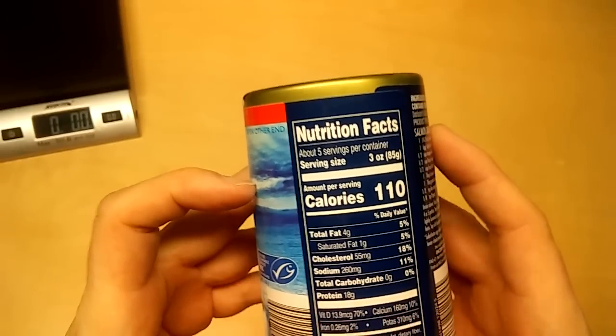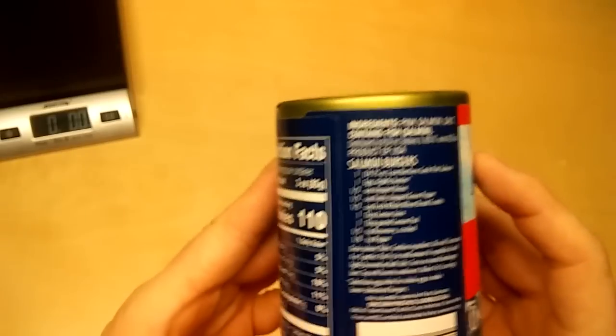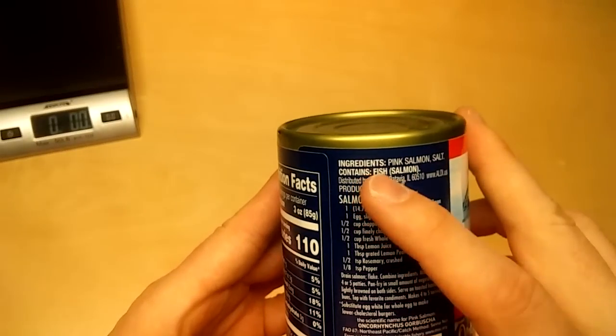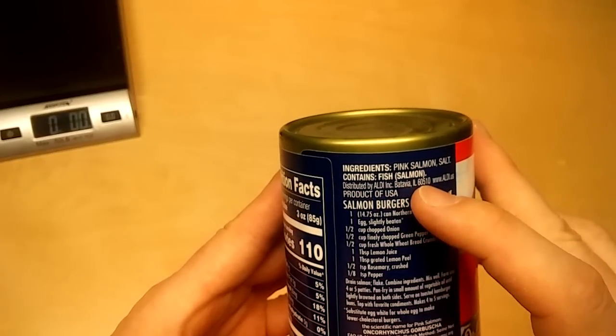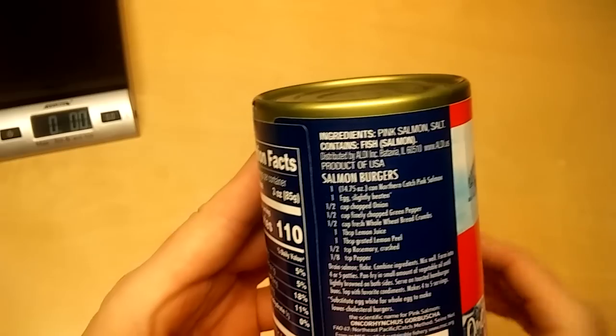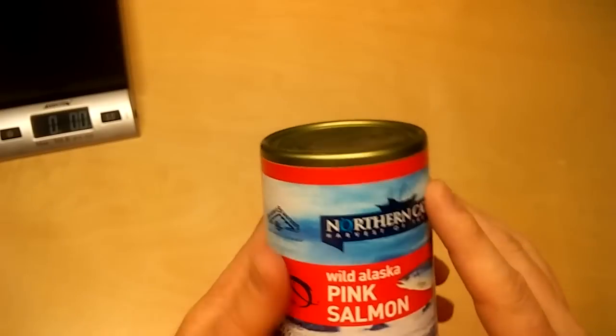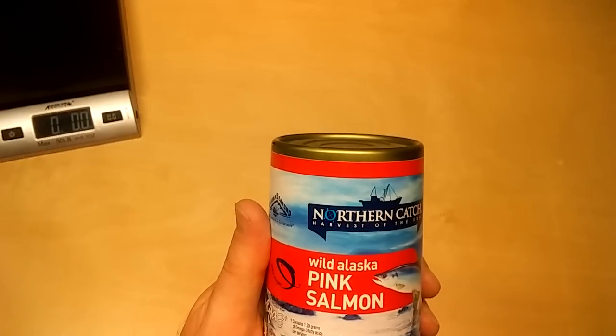Total fat, protein 18 grams, and you get five servings. A lot of protein. It tells you how to make salmon burgers. So the ingredients is pink salmon, salt. Then it says contains fish salmon, distributed by Aldi Inc, part of the USA. Okay, so let's bust this open and find out what's inside it.